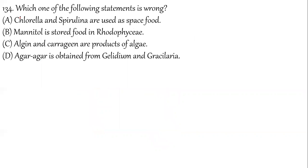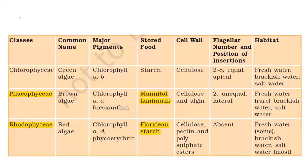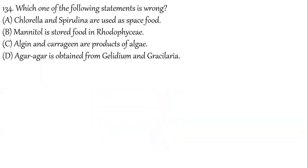Question 134: Which statement is wrong? Floridian starch is seen in Rhodophyta — what is given here? Mannitol is the stored food in Rhodophyta — that is wrong. Mannitol and laminarin are the stored food in Phaeophyta (brown algae), not Rhodophyta. Floridian starch is found in Rhodophyta.